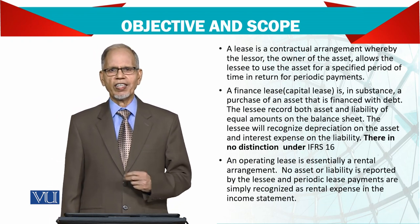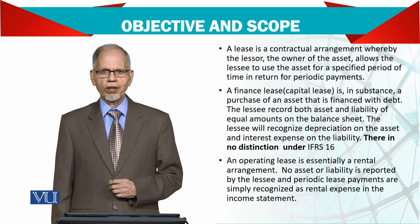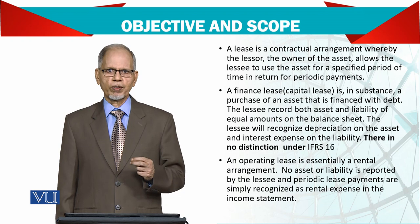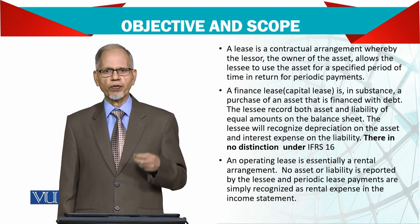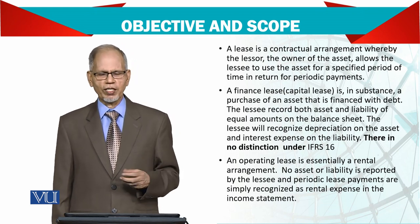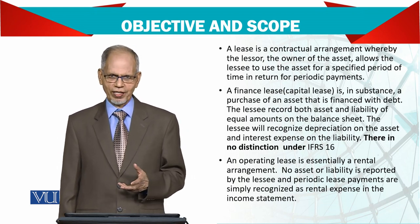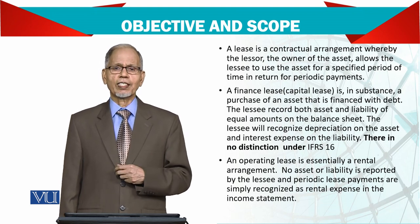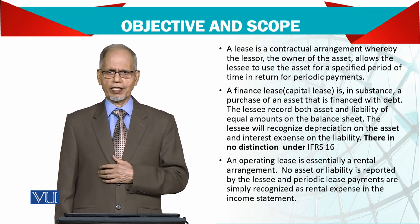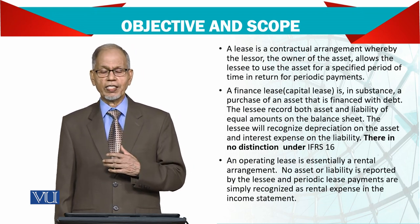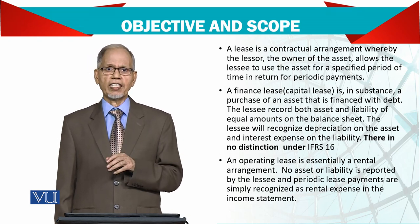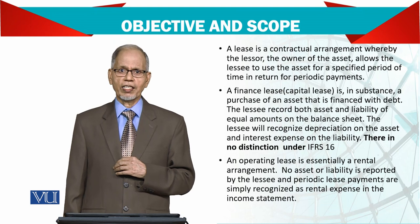Let me briefly explain what operating and finance lease are. An operating lease is basically like a rental — you take a house for rent and pay for it, but you never become the owner. You just keep paying rent as long as you stay. With a finance lease, after making all payments, you become the owner of that asset. That is the difference — you are substantially the owner, and that is why you record it in your books of accounts as well as a liability.